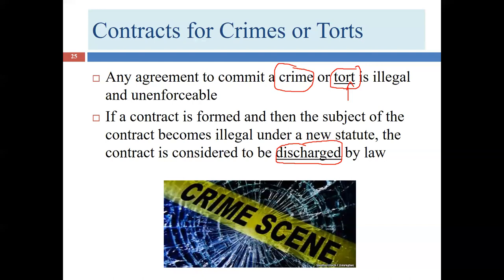Imagine I had entered into an agreement with a local beer distributor to drop off a keg at my dorm every Friday at 5 p.m. for a 12-month period. We had all four elements satisfied: agreement, consideration, legal capacity, and a legal object — nothing wrong at that time with an 18-year-old buying alcohol. Then the law changes in the middle of that 12-month period. The second that law went into effect, my contract with the beer distributor went void — it no longer existed because the way we would comply had become unlawful.